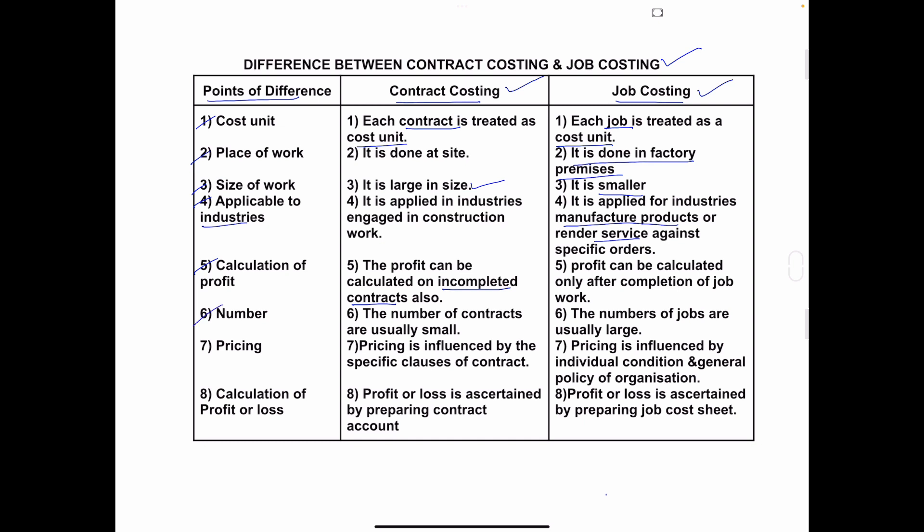Sixth: Number of Contracts or Jobs. The number of contracts in contract costing is usually small, while in job costing the number of jobs is usually large. In contract costing, it involves big contracts that take more than one year to complete, so they take a small number. In job costing, since it involves manufacturing or producing goods, they can take a large number of orders.